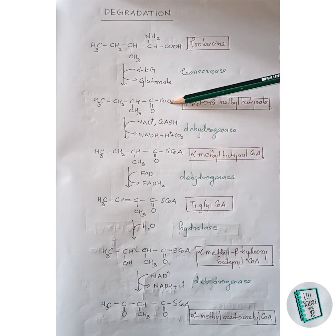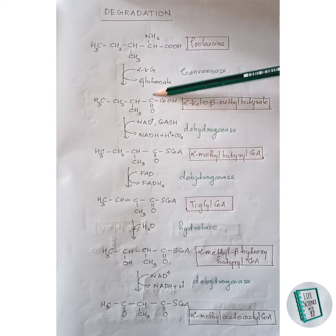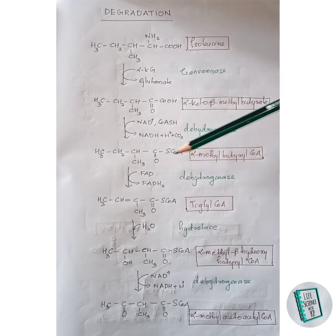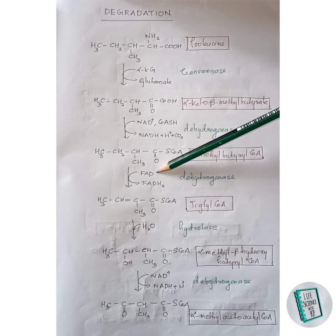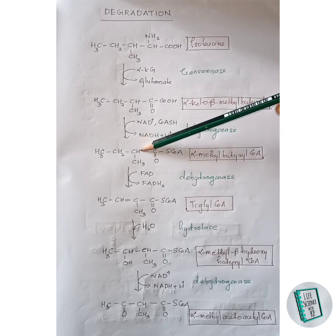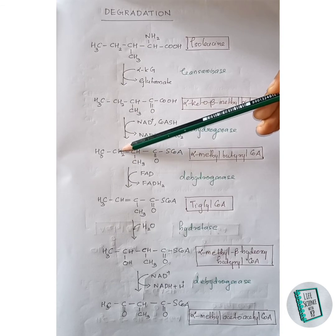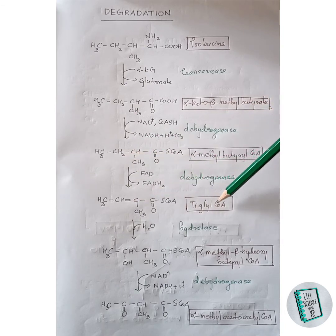The COO⁻ is removed as CO₂, and the S-CoA attaches directly to the carbon, forming alpha-methyl butyryl CoA. This compound then undergoes dehydrogenation in the presence of dehydrogenase enzyme with FAD acting as a coenzyme to form tiglyl CoA. Hydrogen atoms are removed from two adjacent carbons, leaving a double bond between them.